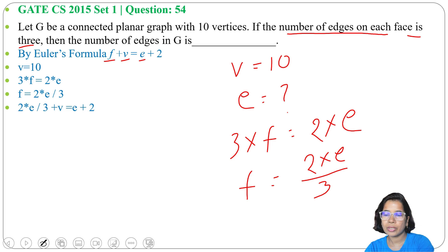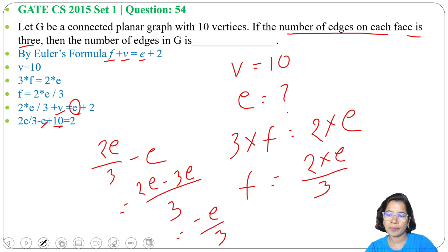So in place of F we can write this formula: 2 into E divided by 3 plus V equals E plus 2. Now we'll take E to the left side, and in place of V we can write 10. 2E divided by 3 minus E equals 2E minus 3E divided by 3, which is minus E divided by 3. So 10 minus E divided by 3 equals 2.